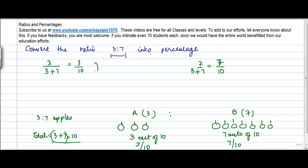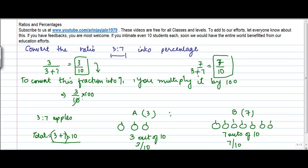Now if you have to convert any ratio into percentage, so basically 3 is to 7 means 3 out of 10 is what was available with the first person and 7 out of 10 for the second person. So to convert this fraction into percentage, you multiply it by 100. So I can write 3 upon 10 into 100, so 10 goes into 100 ten times or 30%.